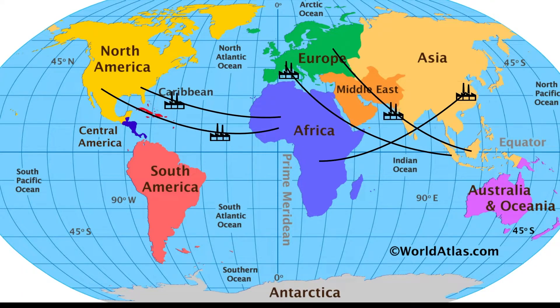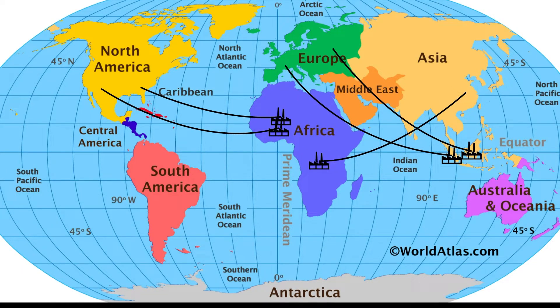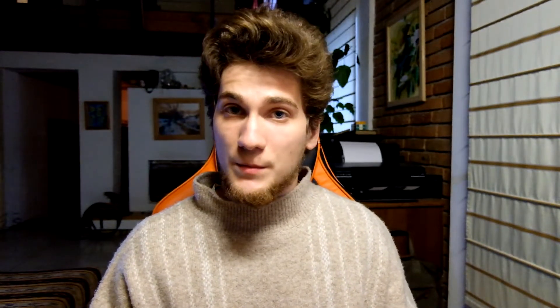Of course, as the EKC curve is only an assumption, it has lots of objections around it. Some studies claim that pollution is not actually decreasing globally — its intensity has simply moved from one part of the world to another. Additional underlying factors behind the creation of pollution havens are differences in regulation and costs of production. It can also be noticed that as we produce more, we consume more, so there is no turning point where consumption will stop — meaning the curve will be straight rather than sloping downward.